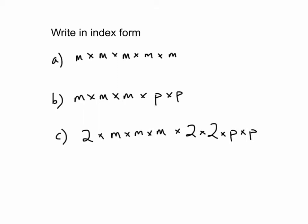To simplify pronumerals, it's the same process. You look for the base and you look for how many times that occurs. So you have, in this case, m to the power of 5.